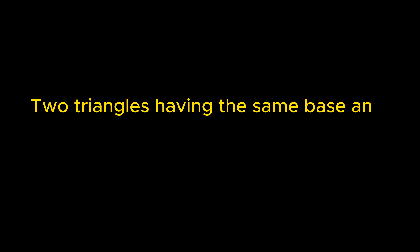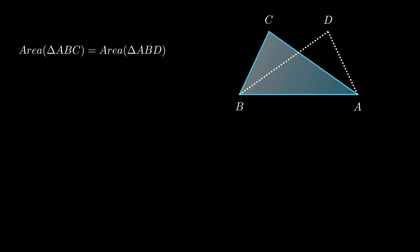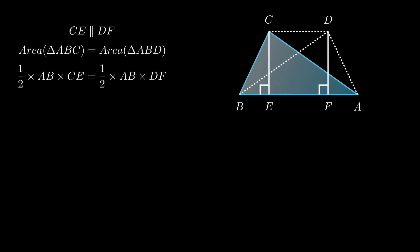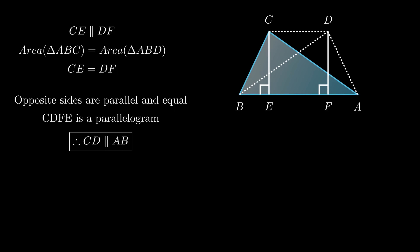This theorem is the converse of the previous one and states that two triangles having the same base and equal areas lie between the same parallel lines. Consider triangles ABC and ADB on the same base AB such that their areas are equal. Draw CE perpendicular to AB and DF perpendicular to AB as altitudes, then join C to D. We need to prove CD is parallel to AB. Since lines perpendicular to the same line are parallel, CE is parallel to DF. Since the areas are equal, CE equals DF. Since opposite sides are parallel and equal, quadrilateral CDFE is a parallelogram, and hence segment CD is parallel to segment AB.